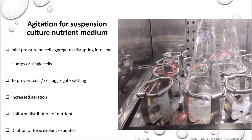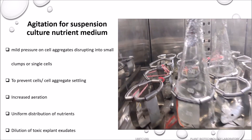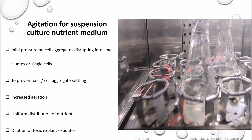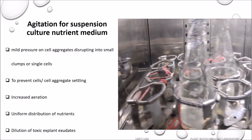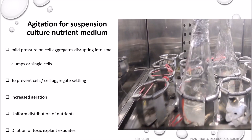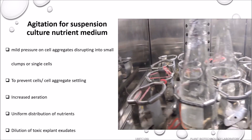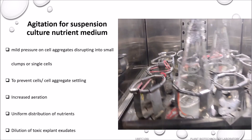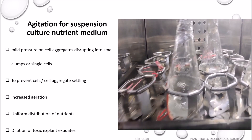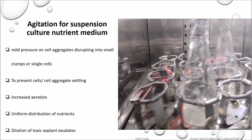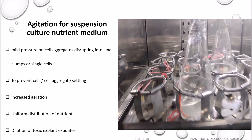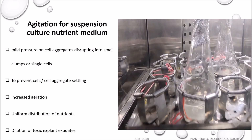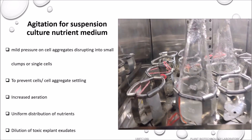Agitation is essential for the suspension culture as it helps to disrupt the cell aggregates into small clumps or single cells. It prevents cells or cell aggregates from settling, and it increases aeration in the nutrient medium. It also helps in uniform distribution of nutrients in the medium and dilutes the toxic explant exudates.